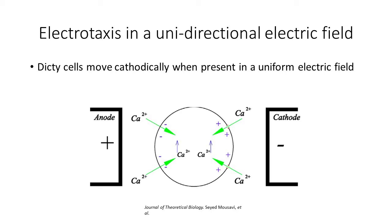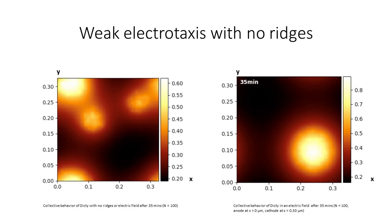So I also simulated the cells under a static electric field. Here on the left is a simulation with just the chemical gradient. And here on the right, I simulated with an electric field. Essentially what electric fields do experimentally to these cells is move them towards the cathode. In my simulation, I put the cathode on the right side, on the right boundary here.